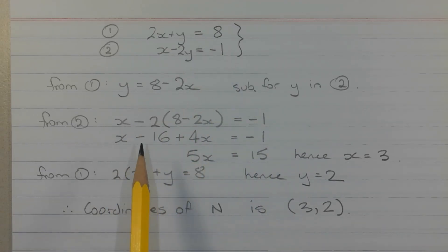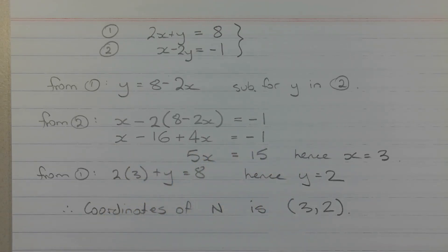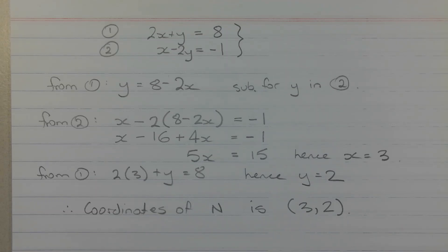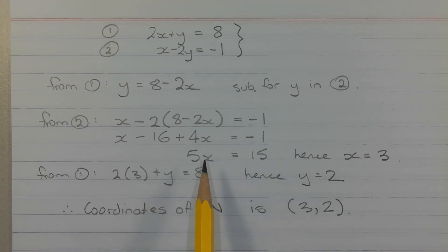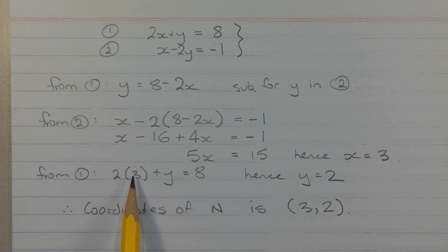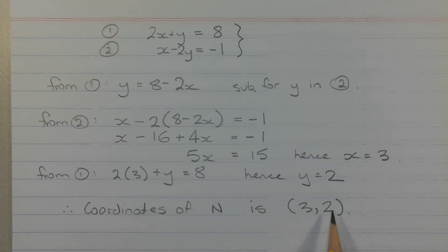Expanding the brackets gives x minus 16 plus 4x equals negative 1. Collecting like terms: 5x equals 15, hence x equals 3. Substituting back into equation 1: 2 times 3 plus y equals 8, so 6 plus y equals 8, meaning y equals 2. Therefore the coordinates of point N are 3 comma 2.